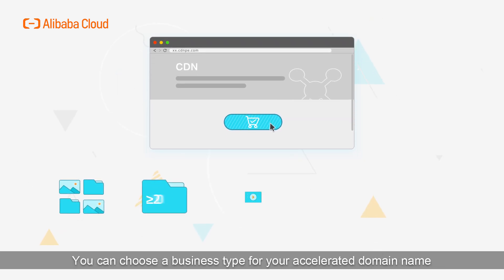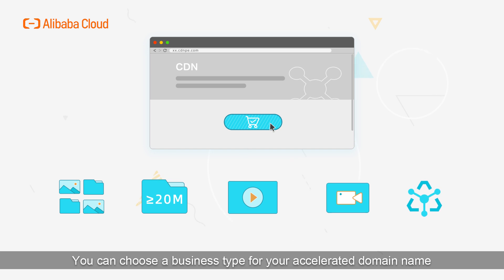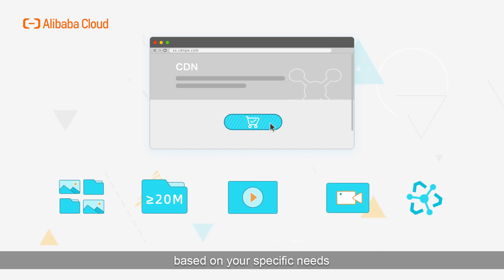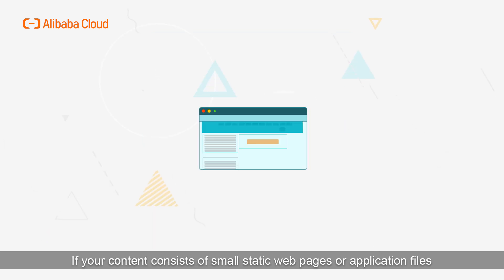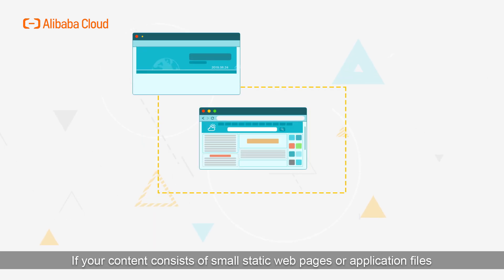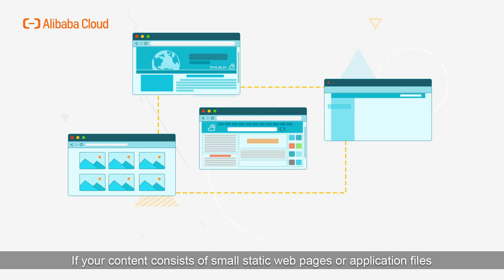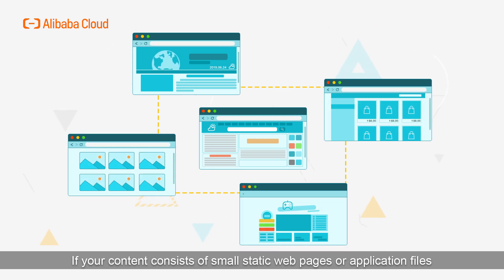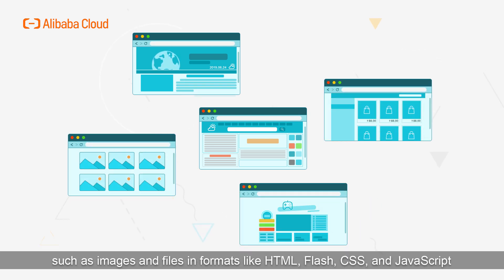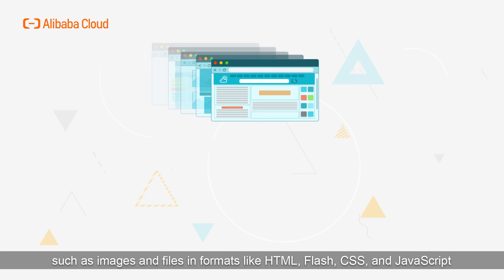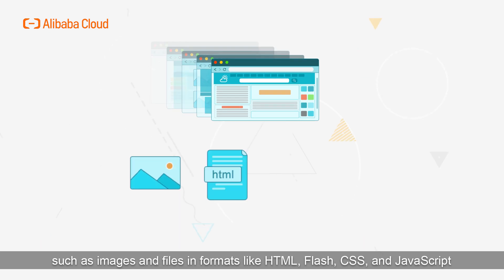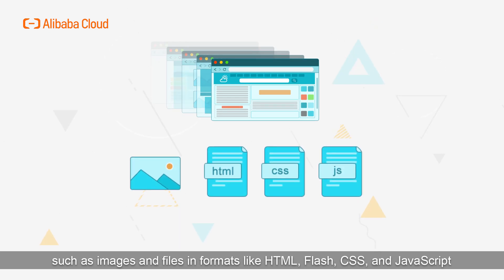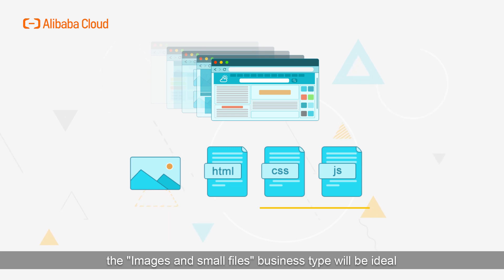Alibaba Cloud CDN provides business types with different specifications. You can choose a business type for your accelerated domain name based on your specific needs. If your content consists of small static web pages or application files such as images and files in formats like HTML, Flash, CSS, and JavaScript, the Images and Small Files business type will be ideal.